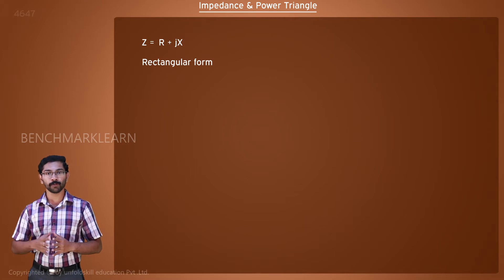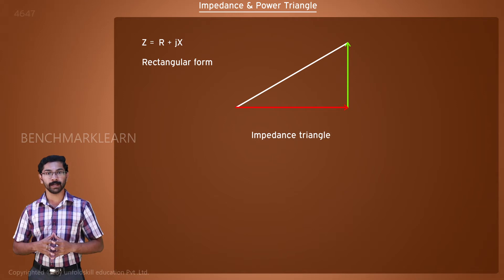We can convert it to polar form using a right angle triangle called the impedance triangle. In an impedance triangle, the resistance forms the base of the triangle. The length of the base depends on the resistance value.